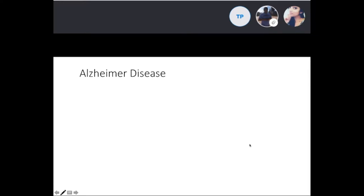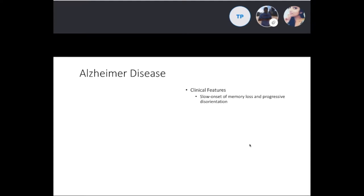Alzheimer's disease is a degenerative disease of the cortex and the most common cause of dementia. Clinical features include problems with new memory formation — you get a slow onset of memory loss, starting with short-term memory and then progressing to long-term memory, leading to progressive disorientation.